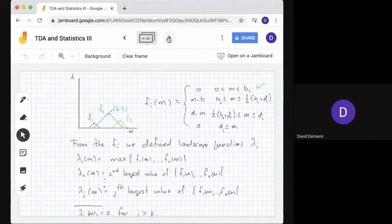The peak functions have a simple definition: zero, increasing with slope one, decreasing with slope negative one, and zero. The formula is: fi(M) = 0 if M ≤ bi; M - bi for bi ≤ M ≤ (bi+di)/2; di - M for (bi+di)/2 ≤ M ≤ di; and 0 for M ≥ di.